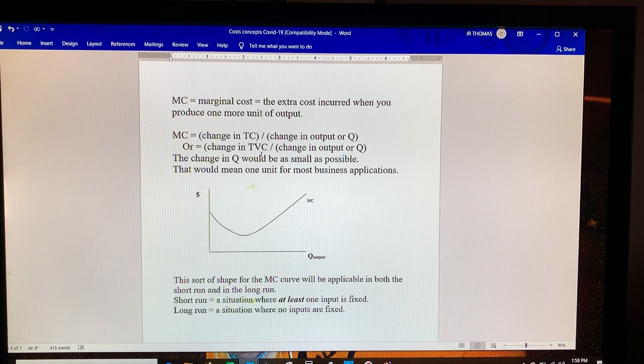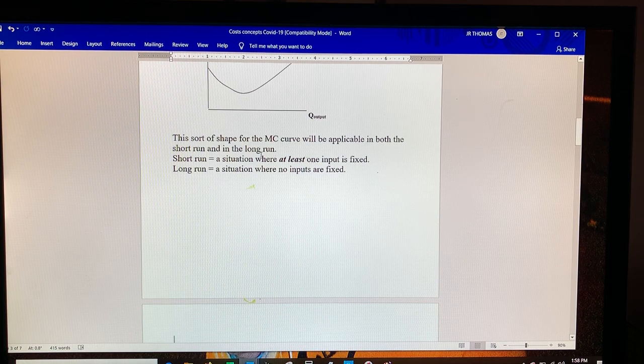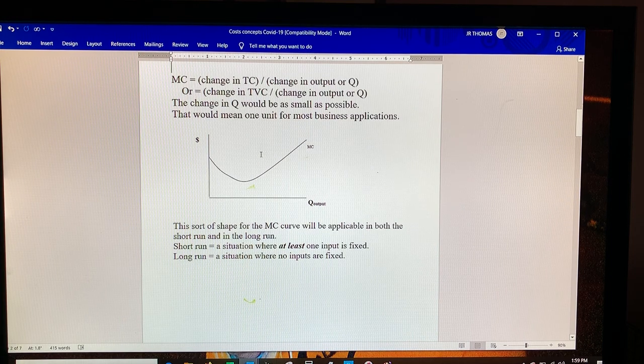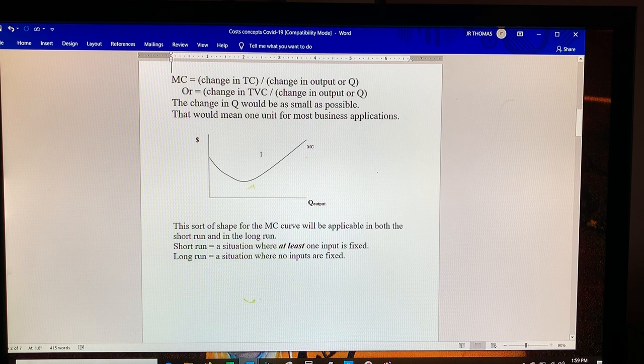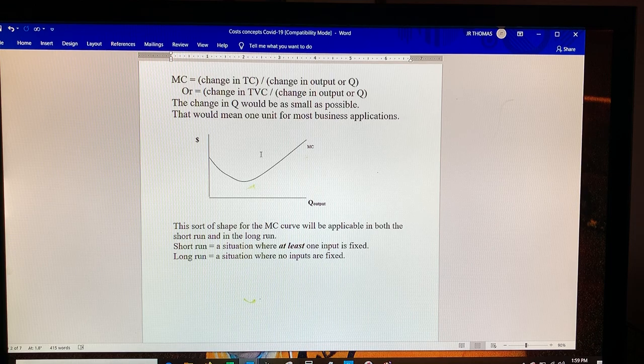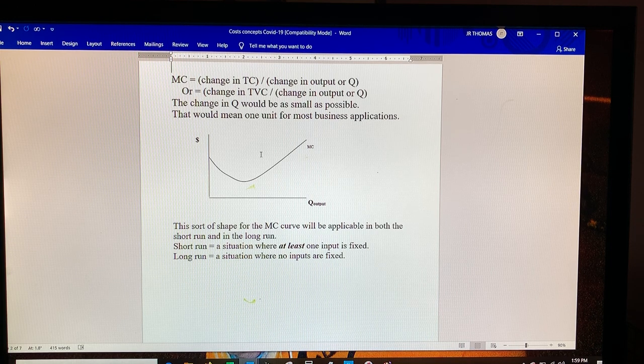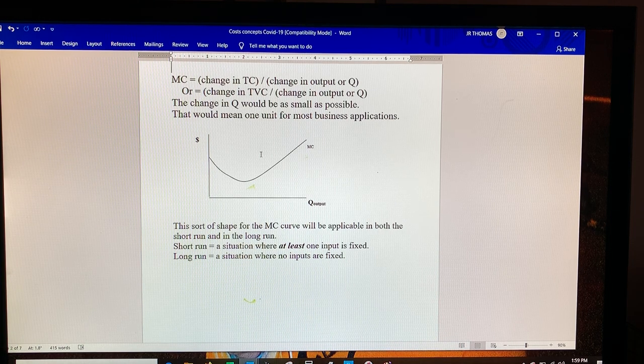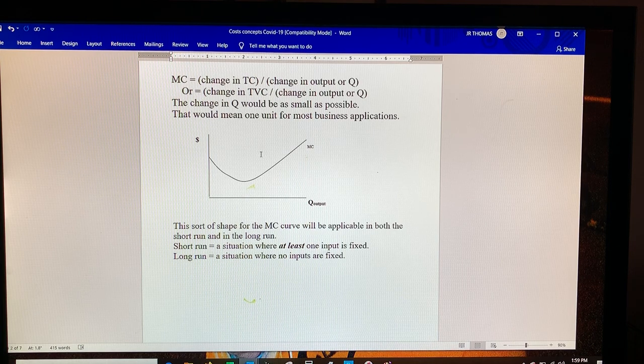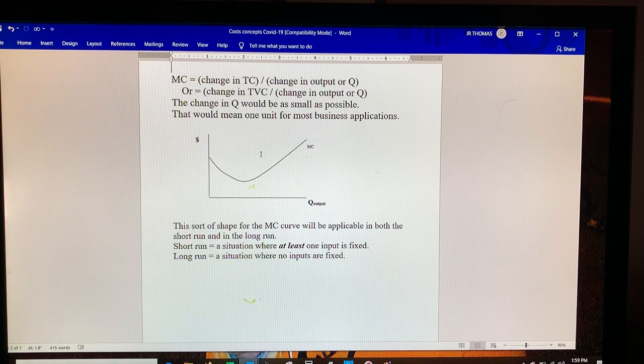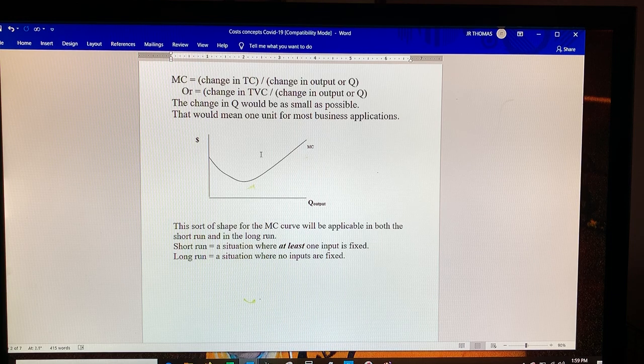This would be the way marginal costs would look in both the long run and the short run. Let me remind you about the difference between long run and short run for an economist. The short run is a situation where at least one of your inputs is fixed—it could be two or three or more, but at least one. The long run would be a situation where no inputs are fixed—you can get more of things, you can get less of things, you can get rid of them. The marginal cost curve will look like that swoosh whether it's long or short run.